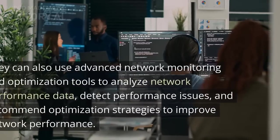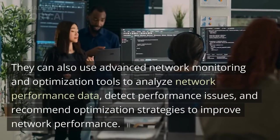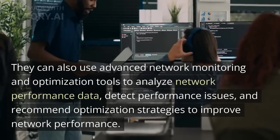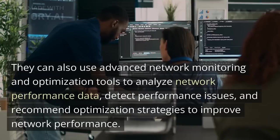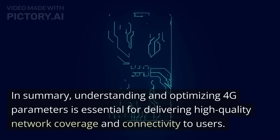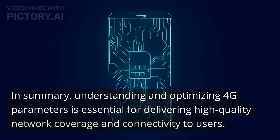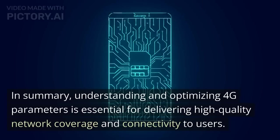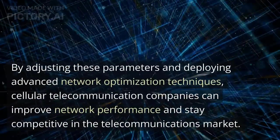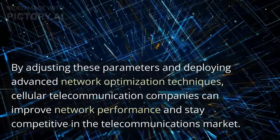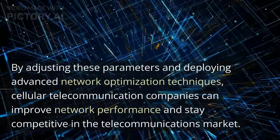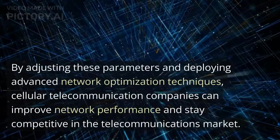They can also use advanced network monitoring and optimization tools to analyze network performance data, detect performance issues, and recommend optimization strategies to improve network performance. In summary, understanding and optimizing 4G parameters is essential for delivering high-quality network coverage and connectivity to users. By adjusting these parameters and deploying advanced network optimization techniques, cellular telecommunication companies can improve network performance and stay competitive in the telecommunications market.